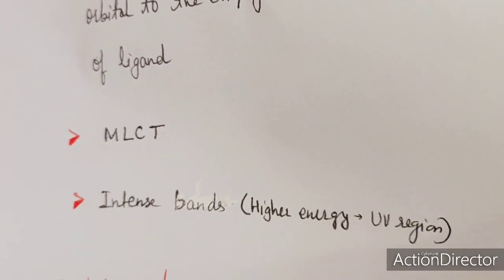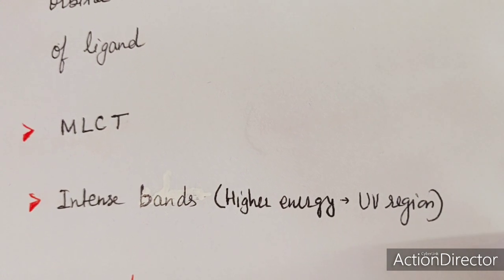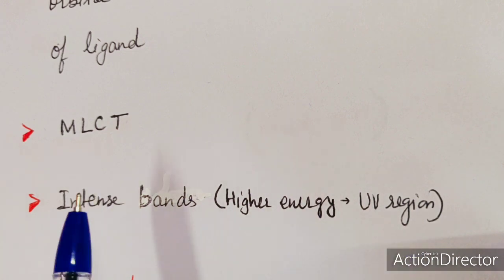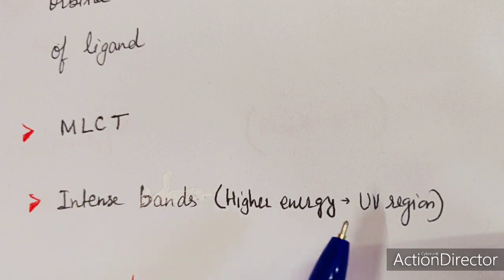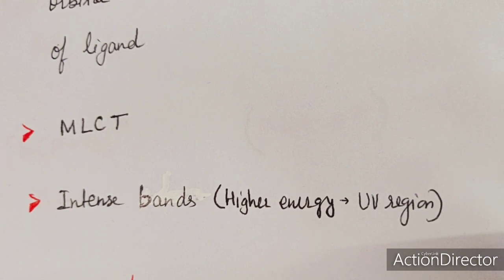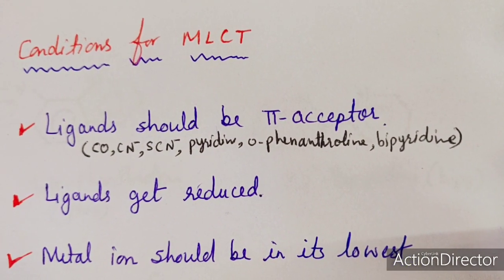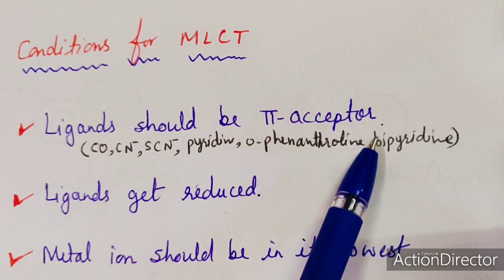The intensity of the bands in such transitions is very high — they are very intense bands. Sometimes they occur in the visible region and sometimes in the higher UV region. The bands are intense because charge transfer transitions are both spin-allowed and Laporte-allowed transitions. There are certain conditions that complexes must satisfy to show this kind of transition.